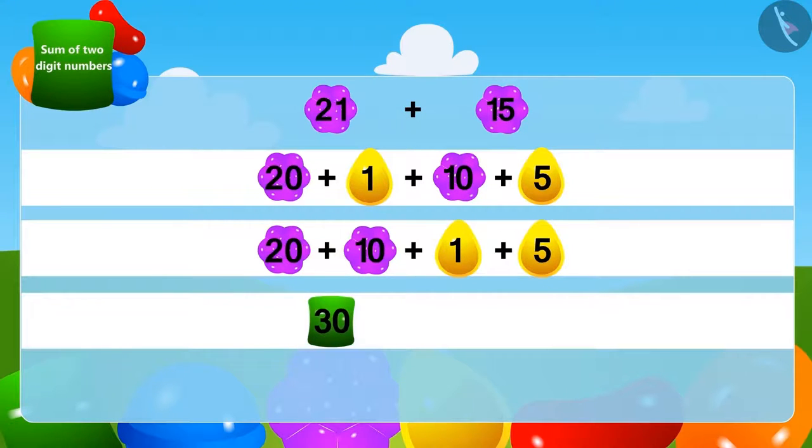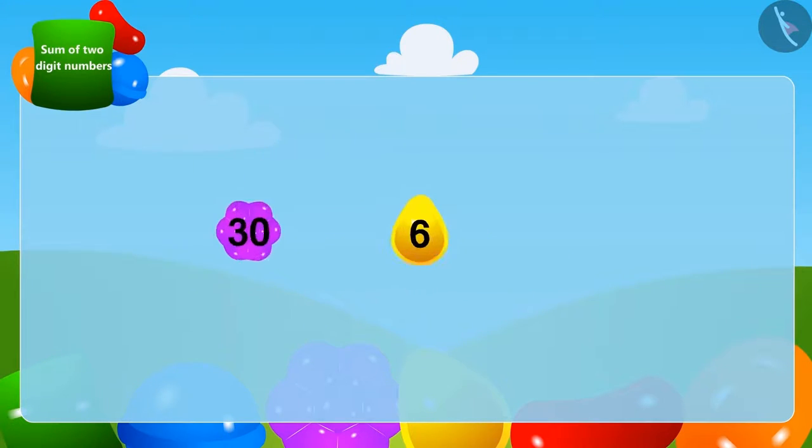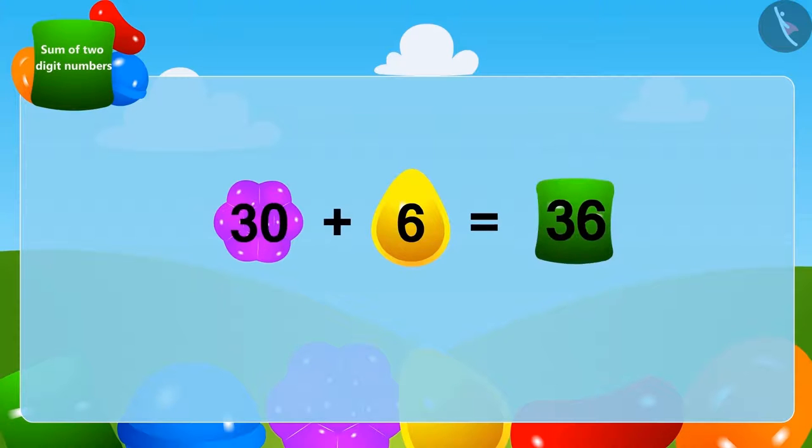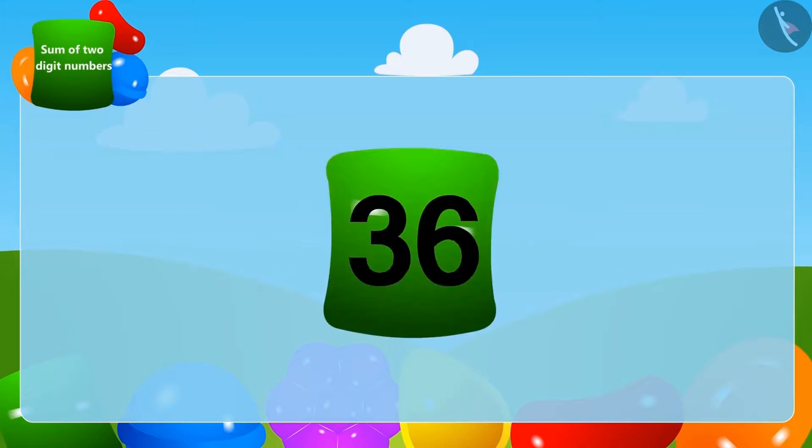And now, we add 5 to 1. We have 6. Finally, by adding 6 to 30, we get 36. Oh yes, the crow has collected a total of 36 stones.